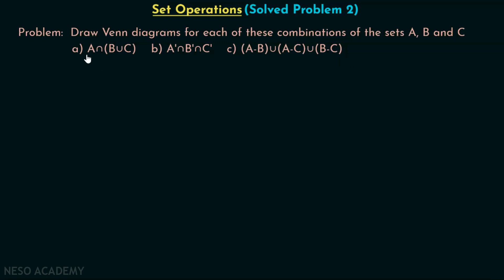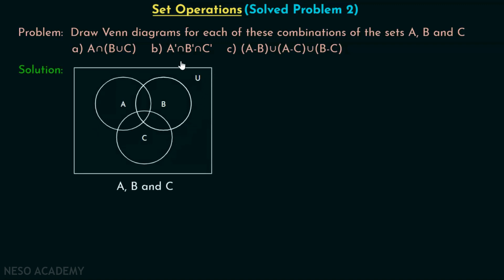Let's consider option A, that is A intersection B union C first, and try to draw the Venn diagram for the same. We will see how a Venn diagram for A, B and C looks like. We must have a rectangle which represents the universe of discourse or universal set, and three circles overlapping inside this region. This circle represents set A, this circle represents set B, and this circle represents set C.